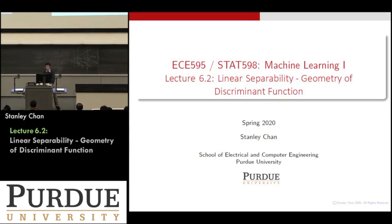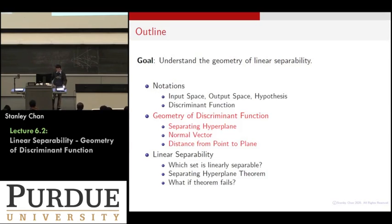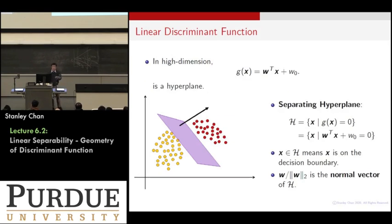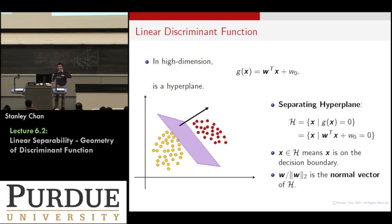What I want to do next is to talk about the geometry in high-dimensional space. So let's imagine that we are now living in a high-dimensional space — high-dimensional means bigger than 2. I want to introduce not just a line, but a plane called the separating hyperplane. This plane is a set containing all x such that g(x) equals 0.